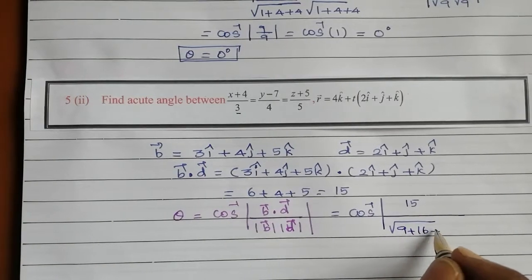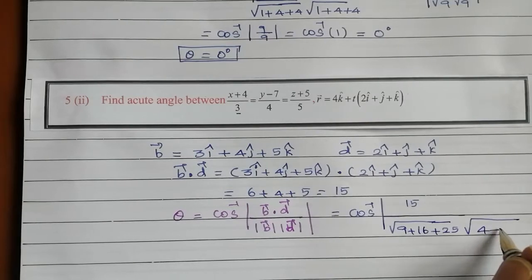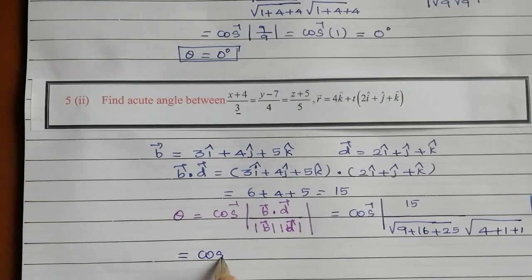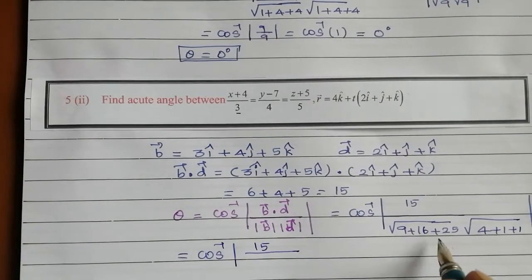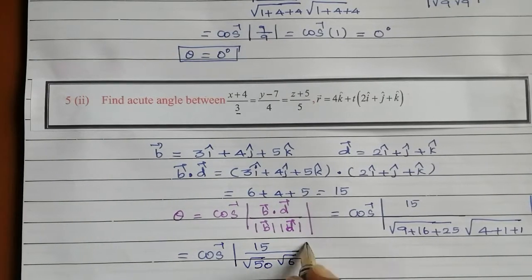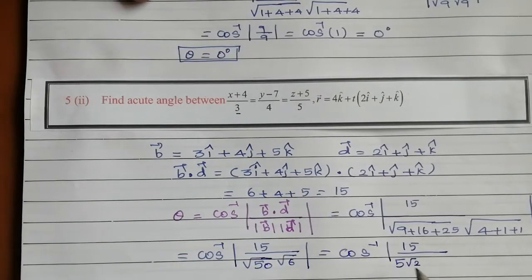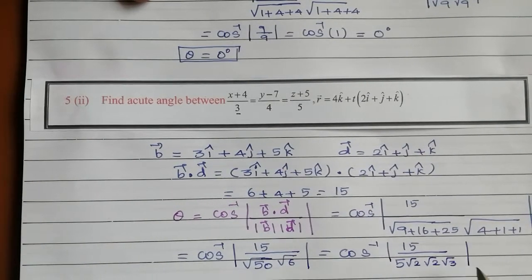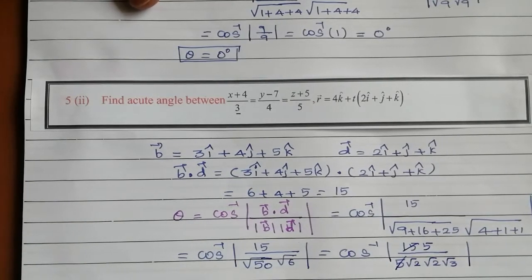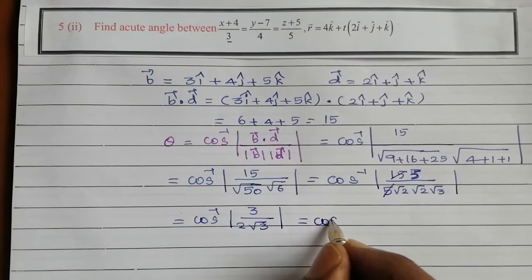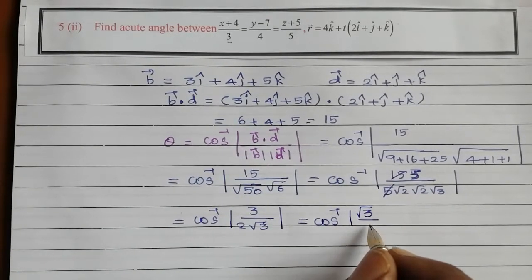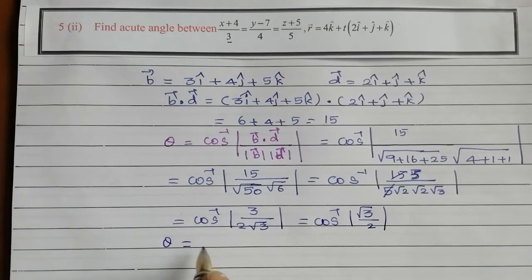Then theta equals cos inverse of the absolute value of 15 divided by root of 9 plus 16 plus 25 into root of 4 plus 1 plus 1. That is cos inverse of 15 divided by root 50 times root 6. Root 50 is 5 root 2, and simplifying gives cos inverse of root 3 divided by 2. Since cos inverse of root 3 over 2 equals 30 degrees, theta equals 30 degrees.